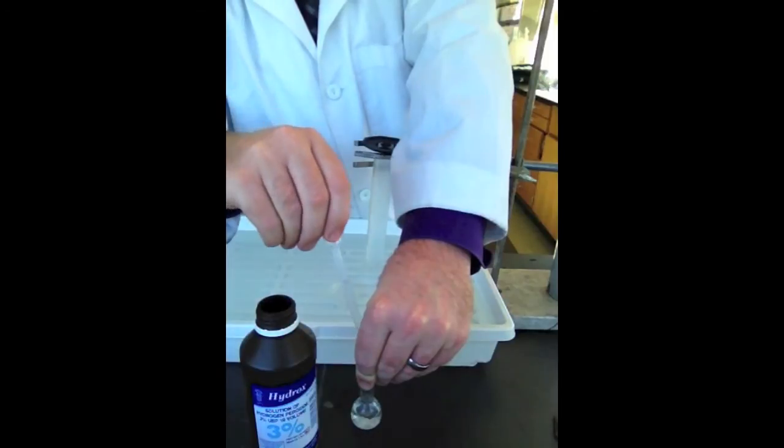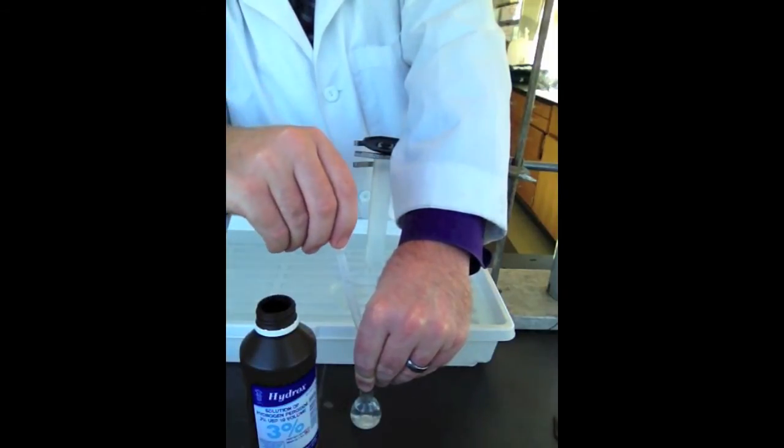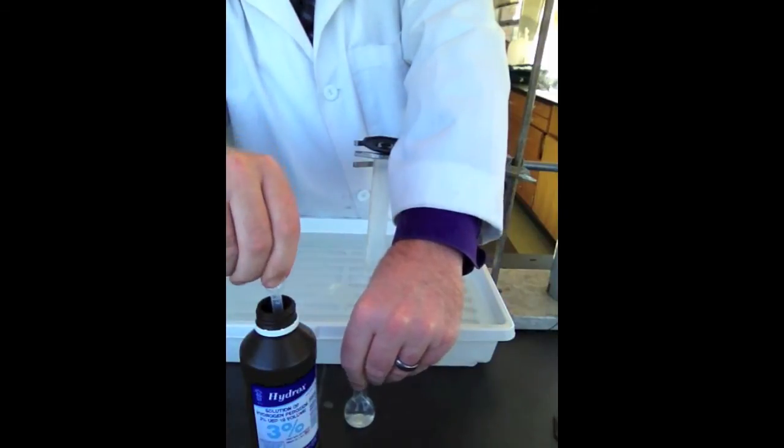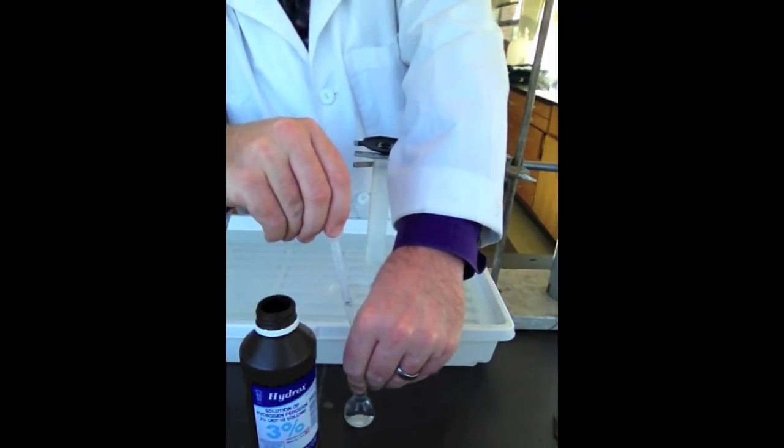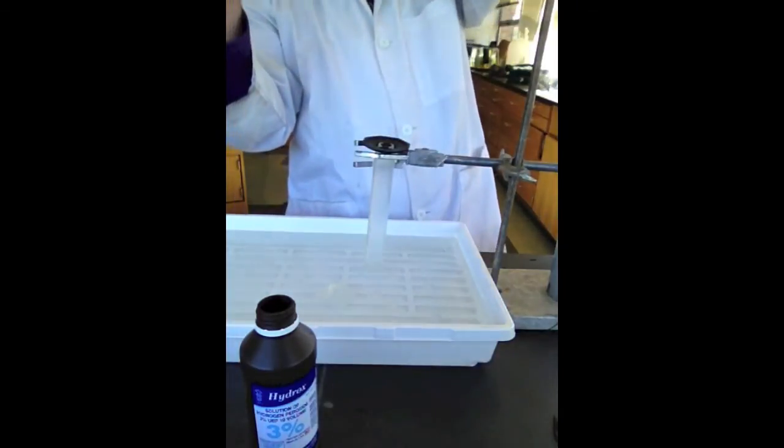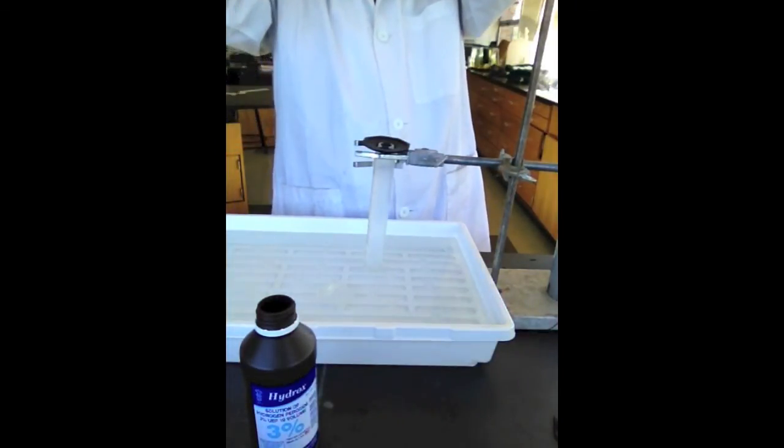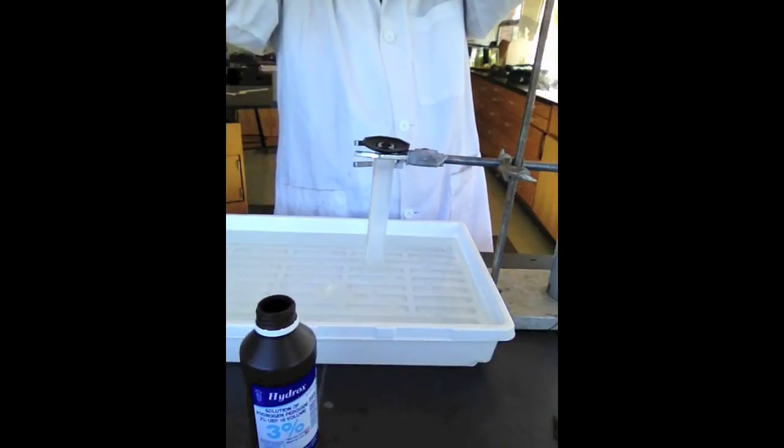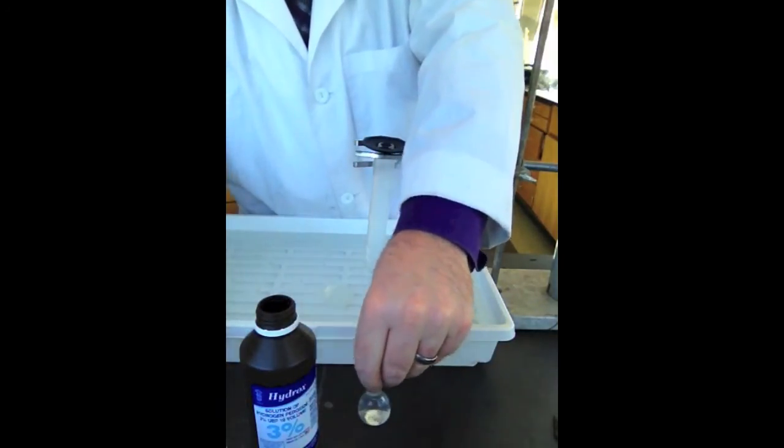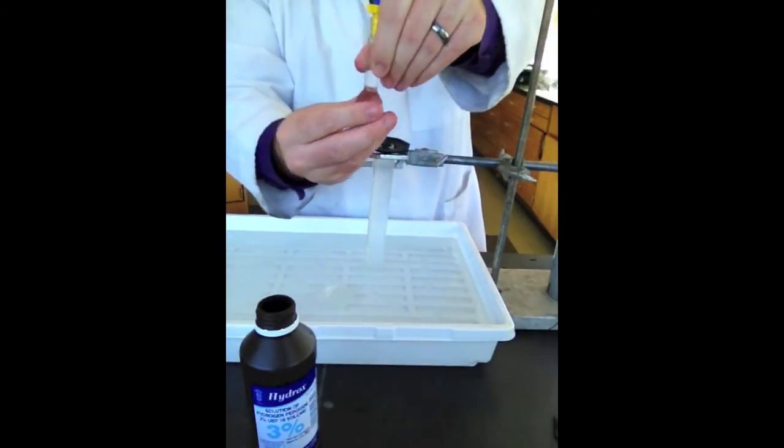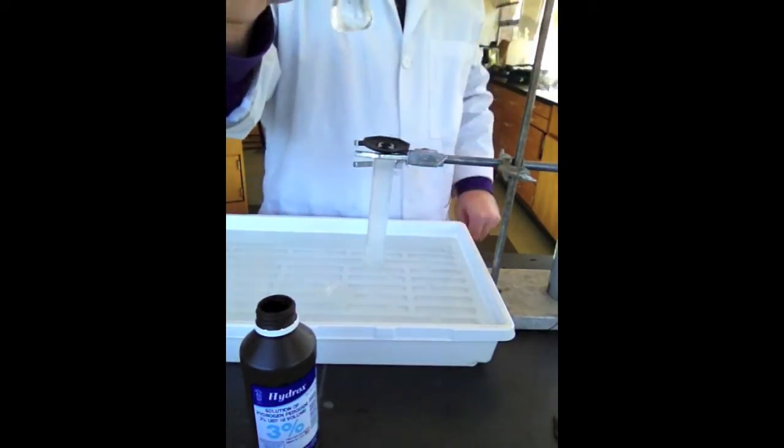Maybe I'll get some bigger pipettes for this, too. All right, that brings it right up to 10 ml. Remember, get the bottom of that meniscus to that white line. And there we go. We have our 10 ml of hydrogen peroxide.